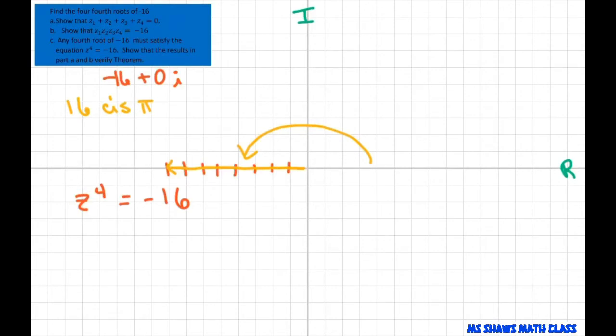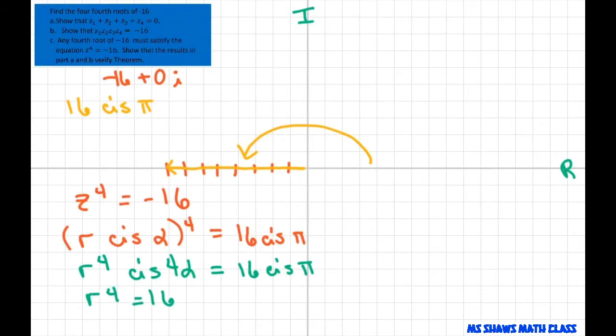So what we can say now is that z to the 4th equals negative 16. So that means R cis of some angle, let's call it alpha, to the 4th equals 16 cis of π. That means R to the 4th cis of 4 alpha from our previous complex numbers equals 16 cis of π. Now that means R to the 4th equals 16, so R equals 16 to the 1/4th, which equals 2.